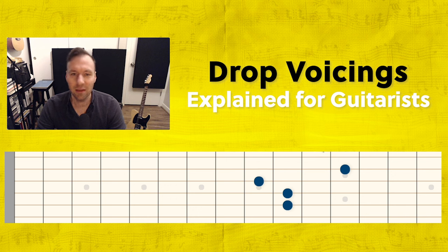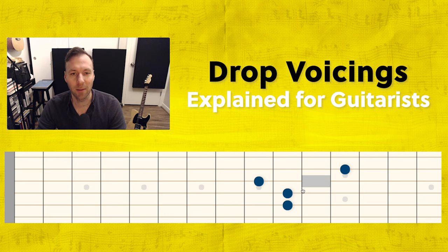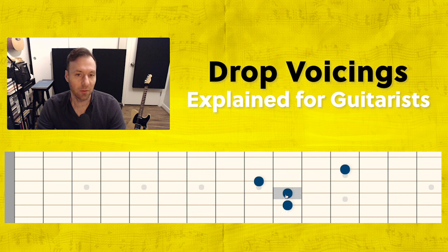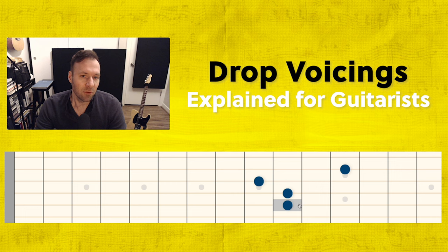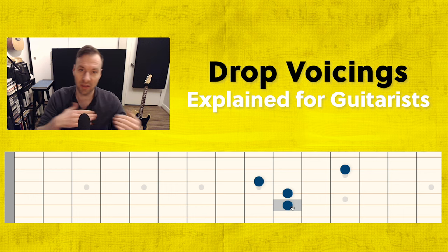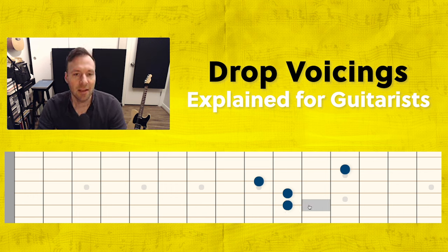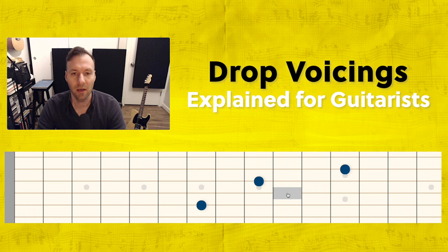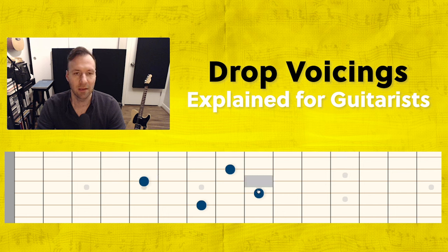I'm going to do a little workaround here - don't get overwhelmed because the trick to figure out if any voicing is a drop chord will be clean and easy after this. If we know that this is the root, that's the third, that's the seven, and that's the five, I'm going to invert this chord by moving every chord tone down the string it's on to the next closest chord tone. So if this is five, I'm moving it down to three; this is one, moving it down to seven; this is three, moving it down to one; and this is seven, moving it down to five.